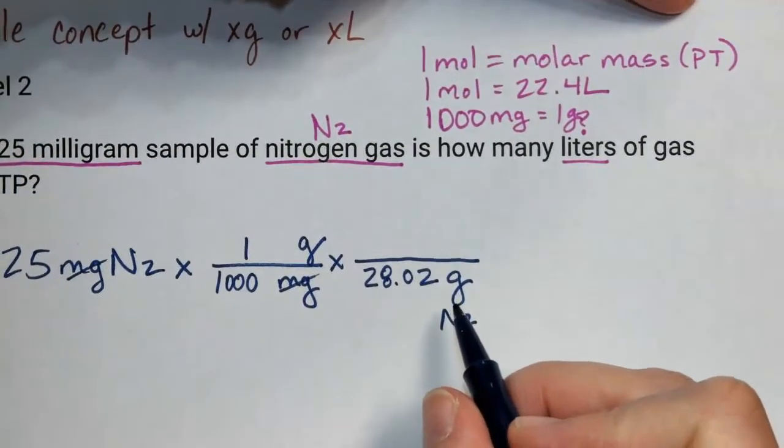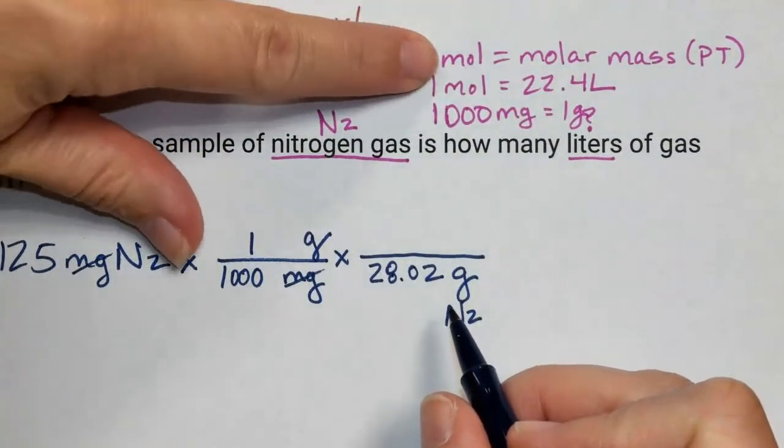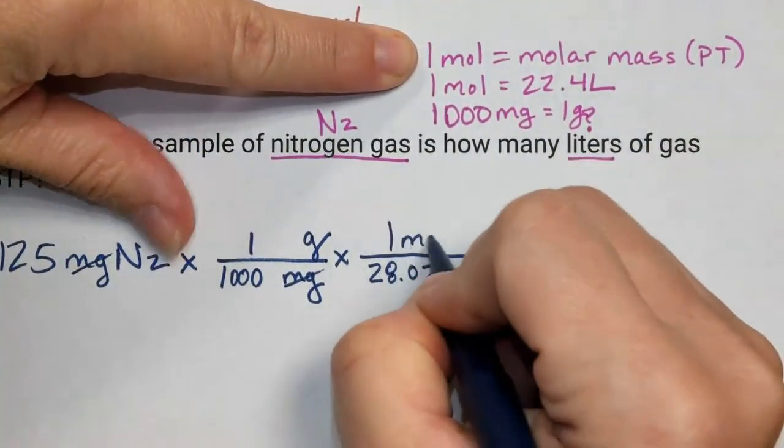And remember, when you get the molar mass from the periodic table, it's equal to 1 mole. So this is 1 mole.